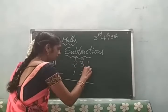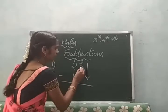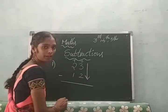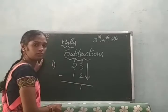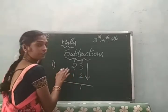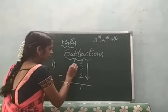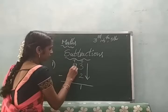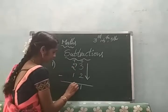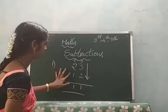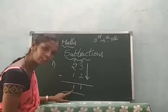So first, the ones column. I will subtract the ones place: 3 minus 2. How much is 3 minus 2? It equals 1. Getting forward into the second place — the tens. 2 minus 1, how much? That gives us 1. So 23 minus 12 is equal to 11.